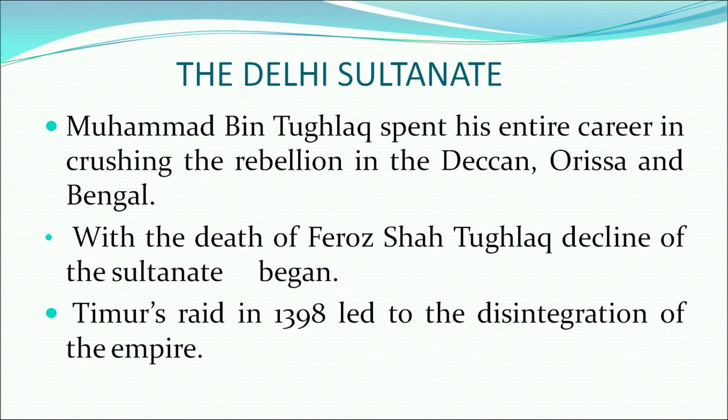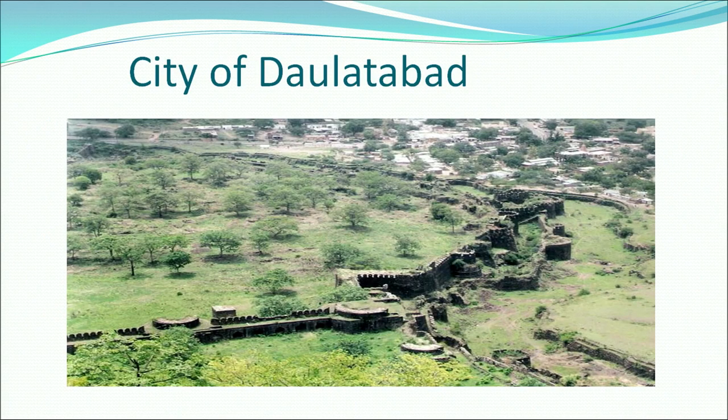He thought that by shifting his capital he could control his territory better. The death of Feroz Shah Tughlaq led to the decline of the Delhi Sultanate, and Timur's raid in 1398 led to the final disintegration of the empire. This is the picture of the city of Daulatabad, founded by Muhammad bin Tughlaq, but because of the scarcity of water, he went back to Delhi.